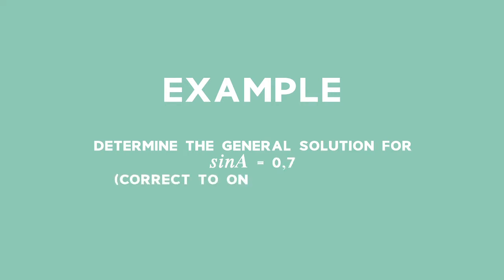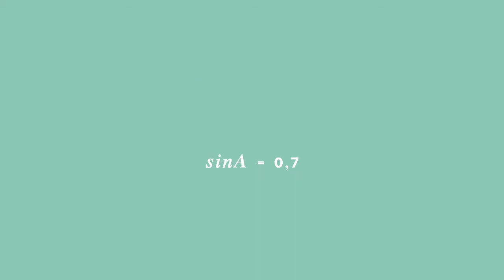For example, determine the general solution for sine of A is equal to 0.7, correct to one decimal place. We are asked to determine the general solution for sine of A is equal to 0.7.